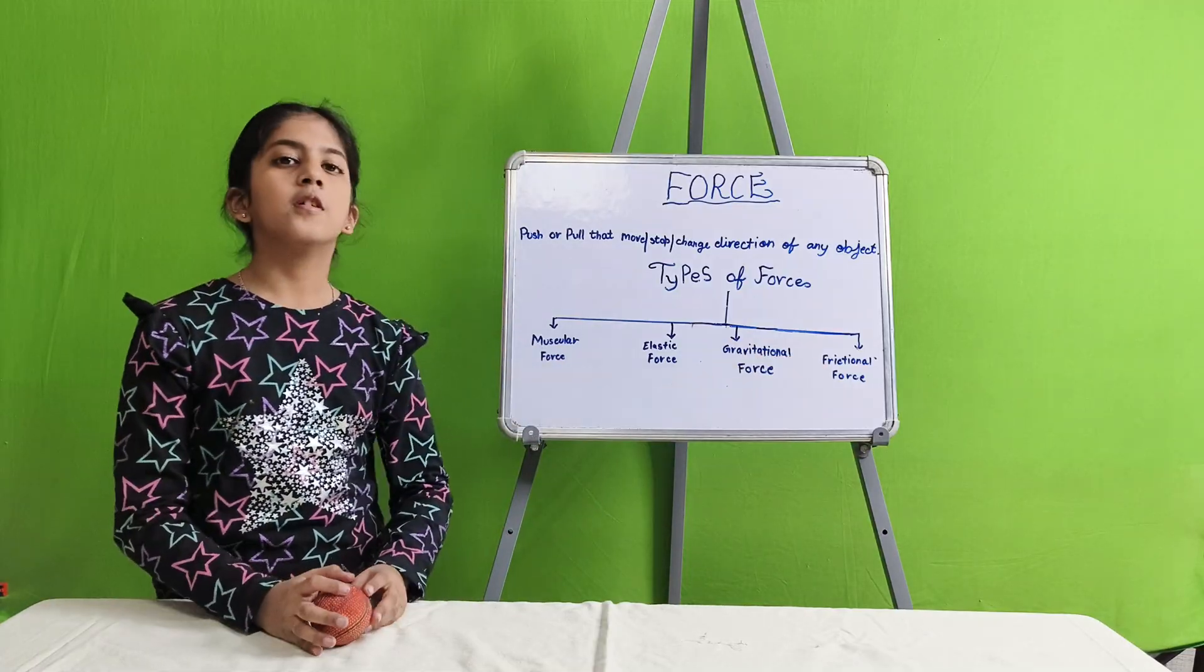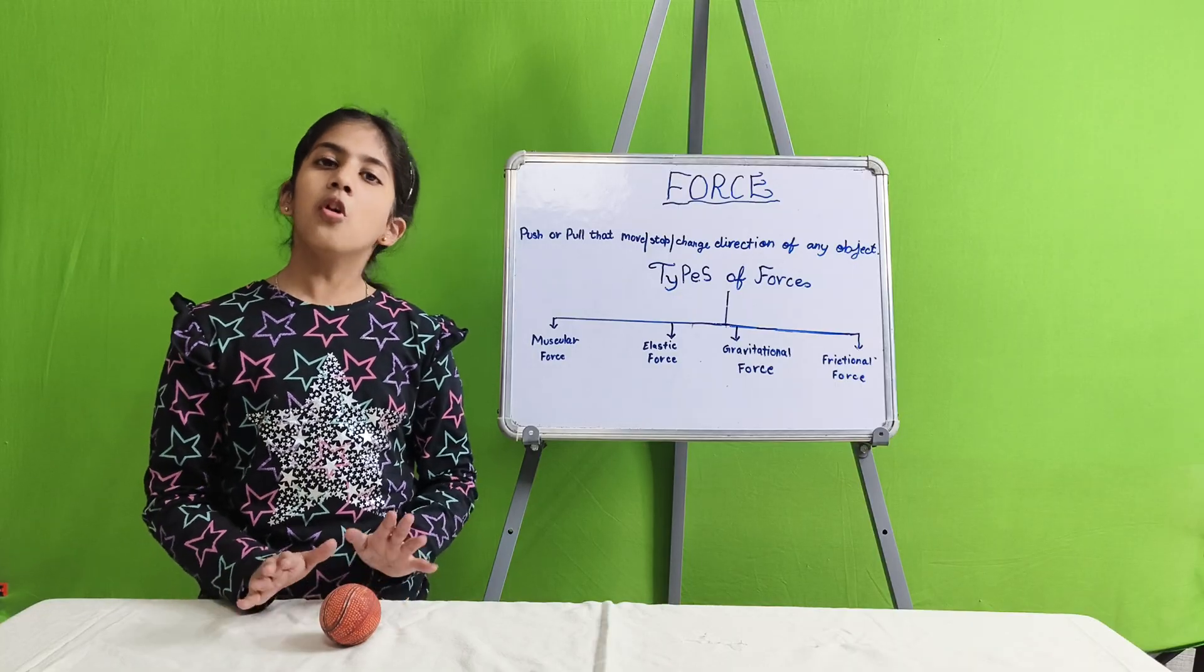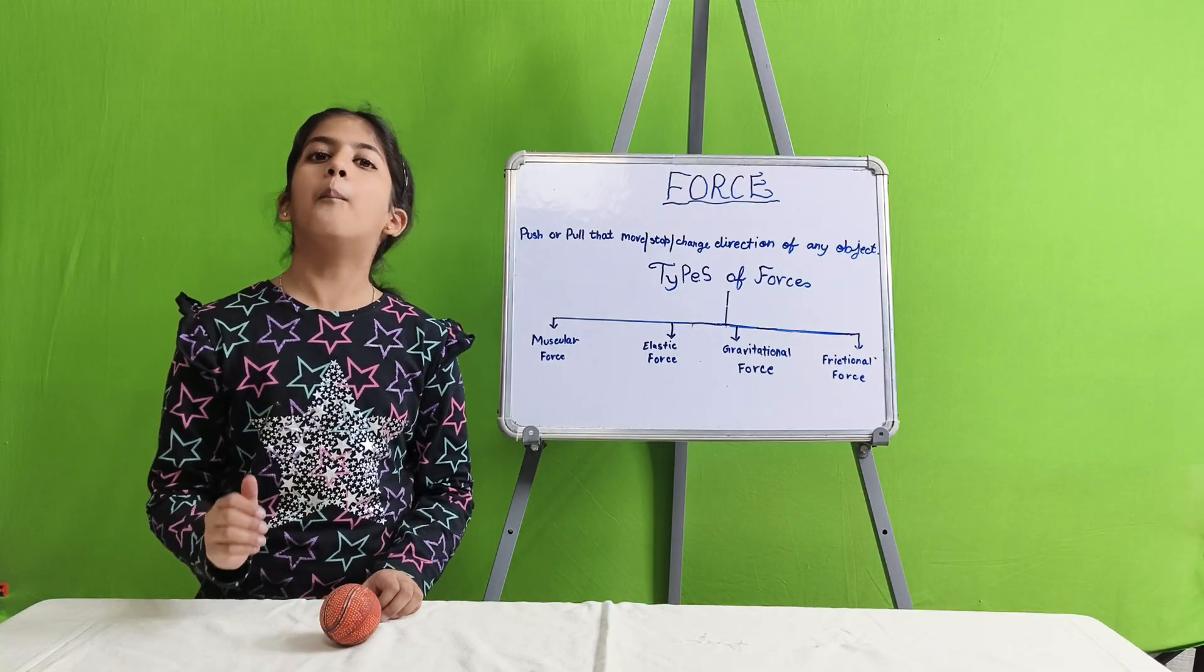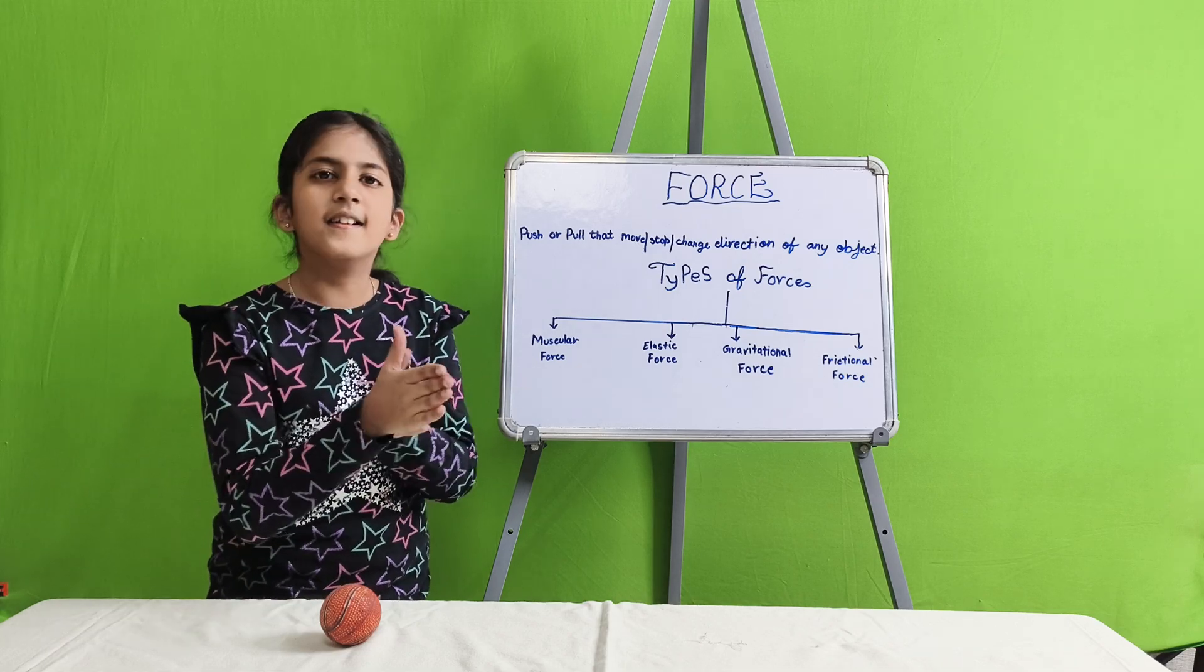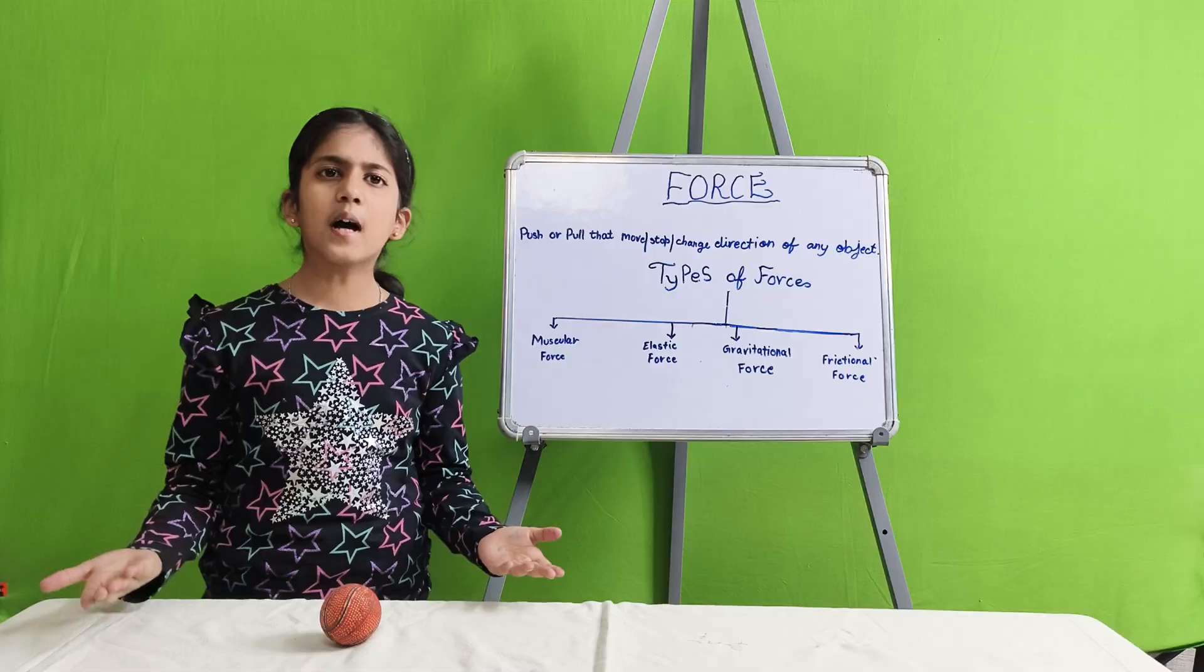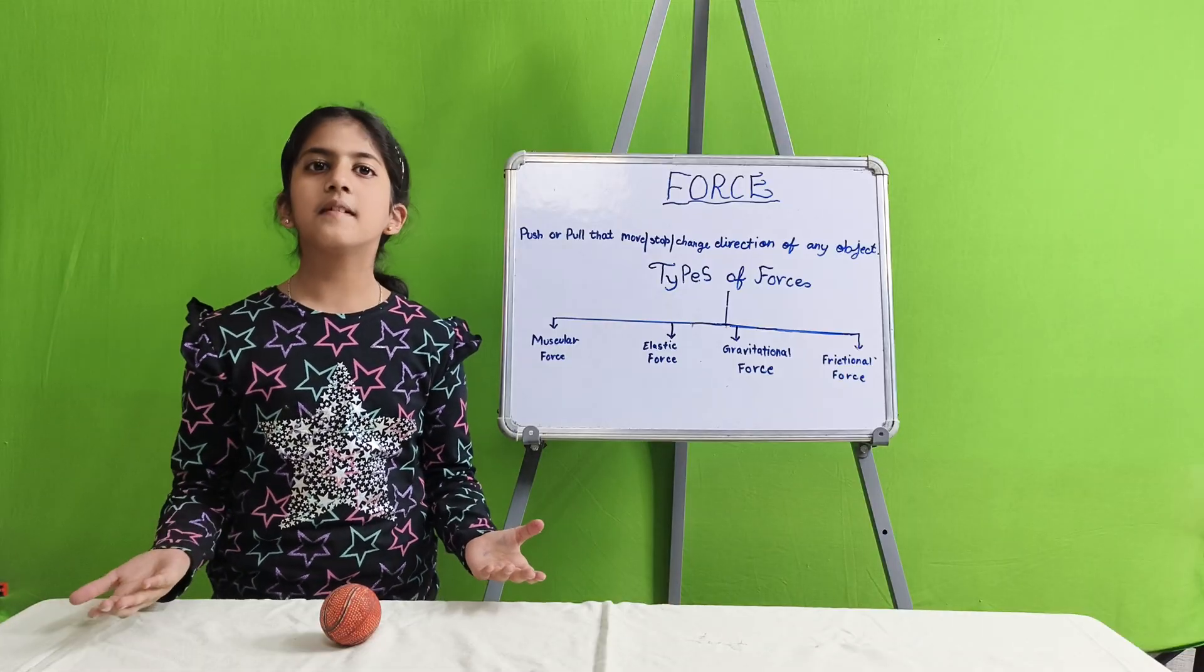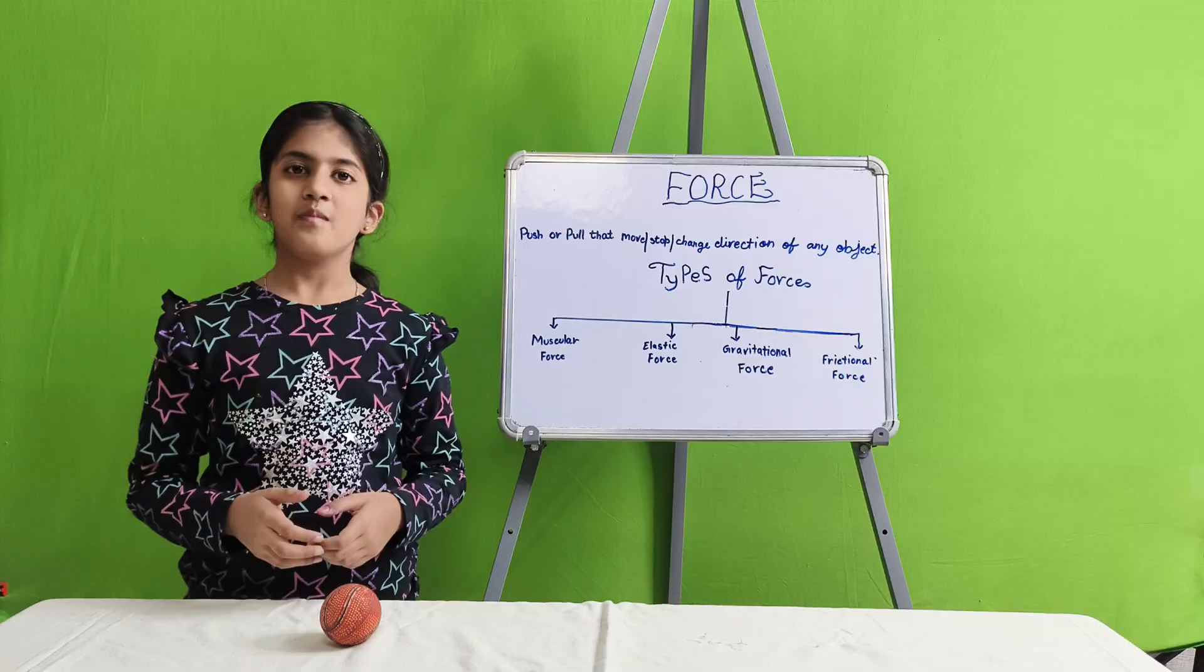Frictional force. Frictional force is the force when two objects move in opposite direction. For example, I am rubbing my hands. This is an example of frictional force. Other examples of frictional force are writing in a notebook, walking, etc.